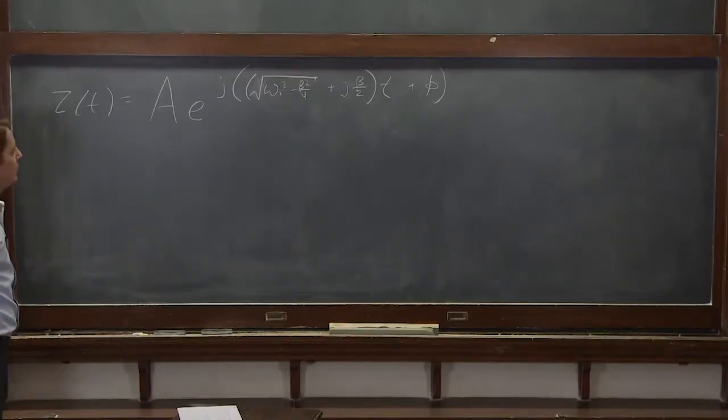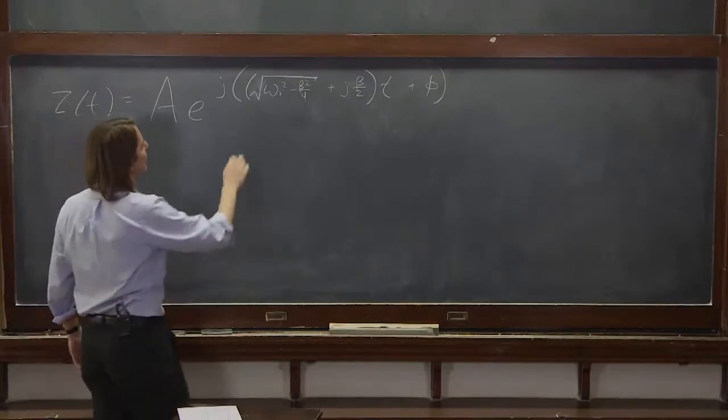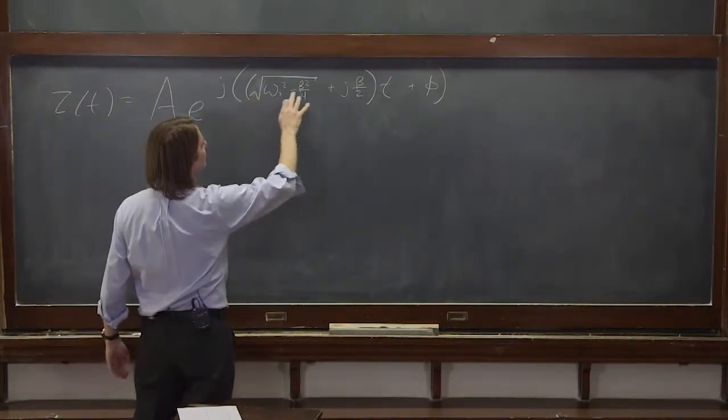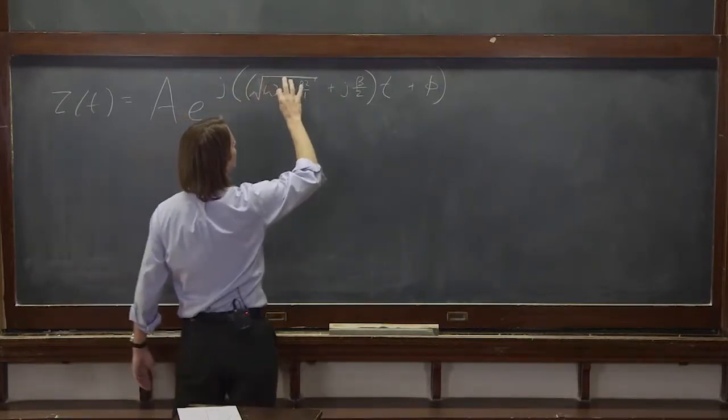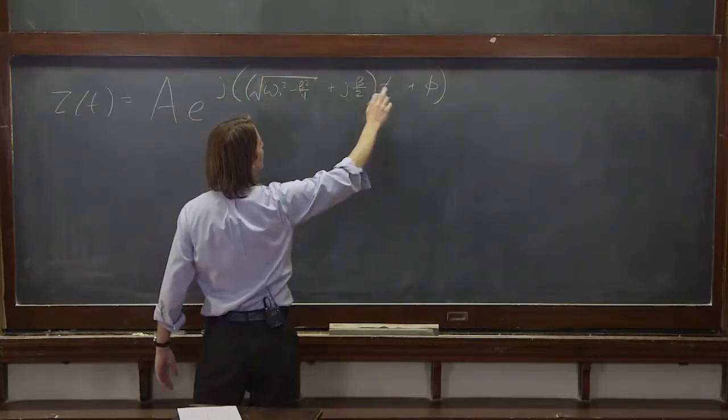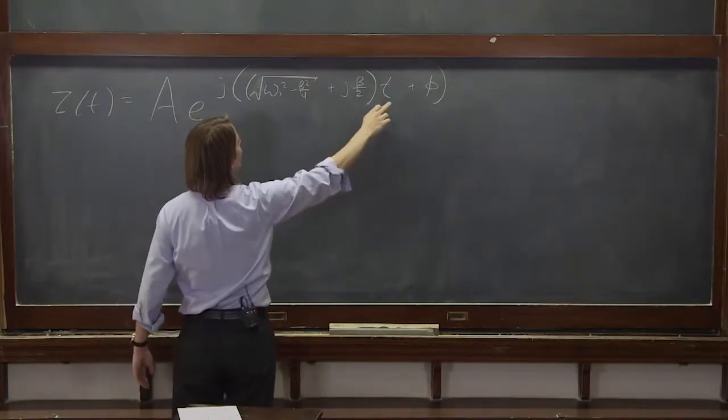Now let's mess with it a little bit. The first thing we could do is distribute this J, and you're going to see what happens. So this is E to the J, a real number, T. So this part really makes up the oscillator.